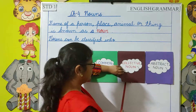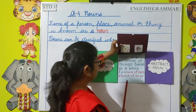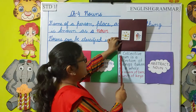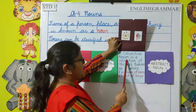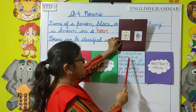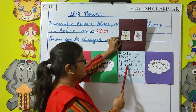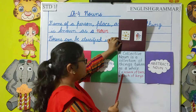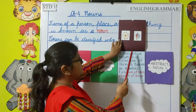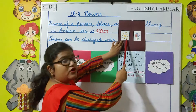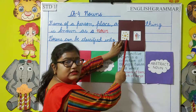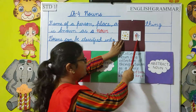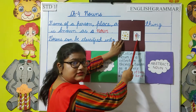Next, collective noun. A collective noun is a collection of things taken as a whole. For example, a swarm of bees — these are groups. A bunch of keys.